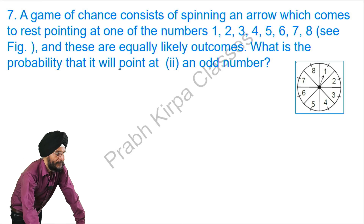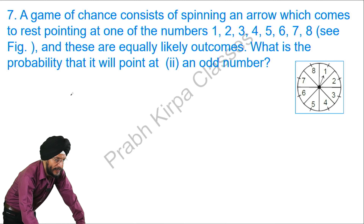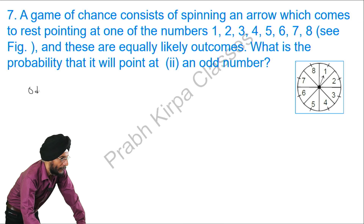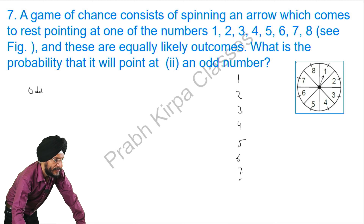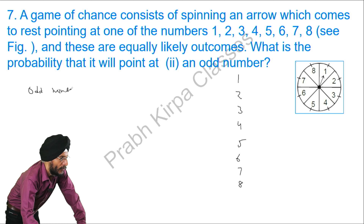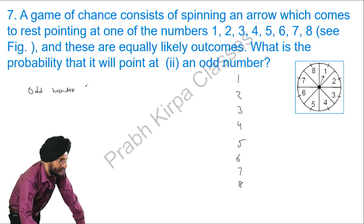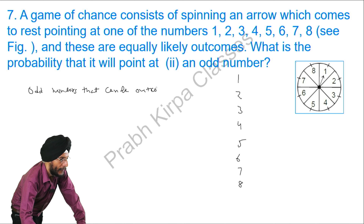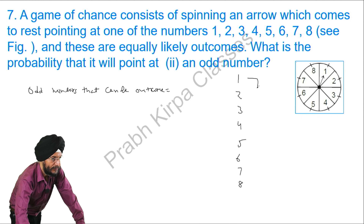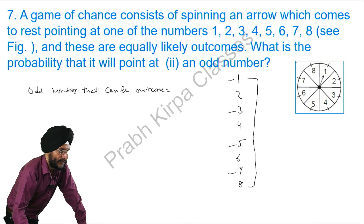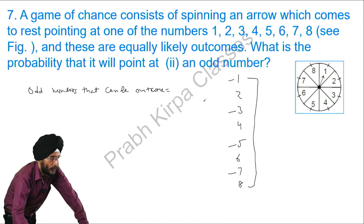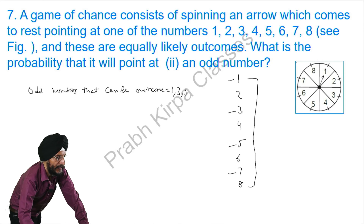Next: what is the probability that the arrow will point at an odd number? We need to know what odd numbers are. From the numbers 1, 2, 3, 4, 5, 6, 7, 8, the odd numbers that can be outcomes are 1, 3, 5, and 7.